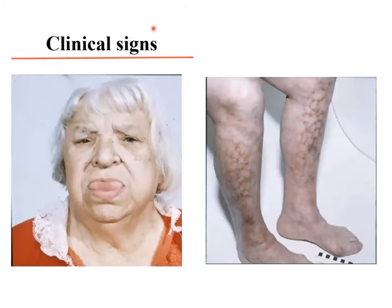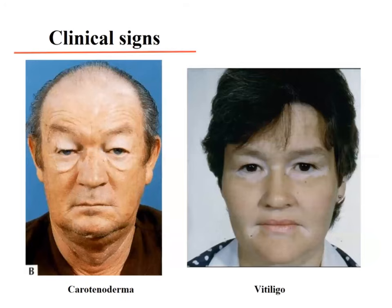Clinically, hypothyroidism presents with facial puffiness, an apathetic face, generalized myxedema, carotenodermia with yellowish skin, and sometimes vitiligo with whitish skin patches.